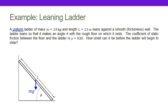So now I can draw my force of gravity vector. I continue reading along and see that I know the mass and the length of the ladder, and that it's resting against a smooth wall. I'm going to mark that point and call it P, just so I don't have to write 'wall' all the time.